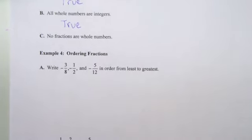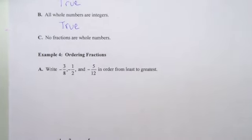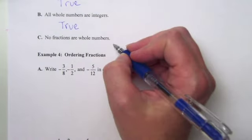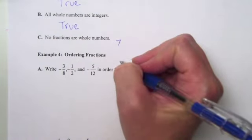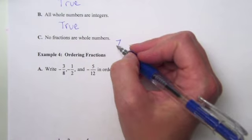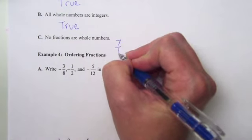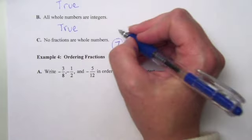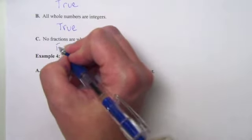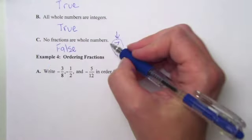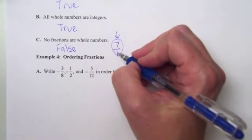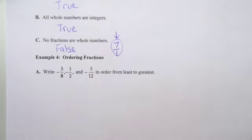Letter C: no fractions are whole numbers. Be careful and think about that. Our whole numbers include 0, 1, 2, 3 — none of those seem to be fractions. But if we take the number 7, which is in fact a whole number, we can make it a fraction by putting it over 1 to get 7/1. This is our counterexample — the statement is false, and 7/1 is the counterexample because it is in fact a whole number.